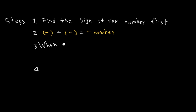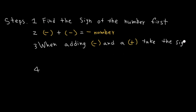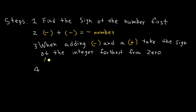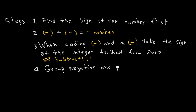Another step to look at is when adding a negative and a positive: take the sign of the integer that is farthest from 0 and subtract. And the last step, which will help you avoid mistakes, is to always look at the problem given and group the negative and positive numbers separately. Then just add the negative numbers and add the positive numbers.